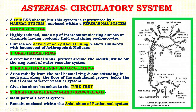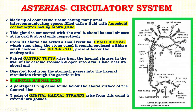Third is the axial gland, also known as the heart gland or brown gland. This is the main part of the haemal system. It remains enclosed within the axial sinus of the perihemal system and is made up of connective tissue having many small intercommunicating spaces filled with fluid containing amoeboid coelomocytes. This gland is connected with the oral and aboral haemal sinuses at its oral and aboral ends respectively. From its aboral end arises a small terminal head process which runs along the stone canal and remains enclosed within the dorsal sac, present below the madreporite.